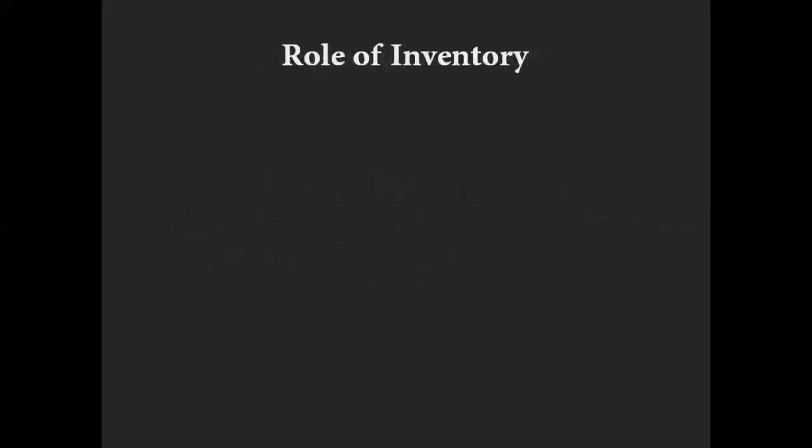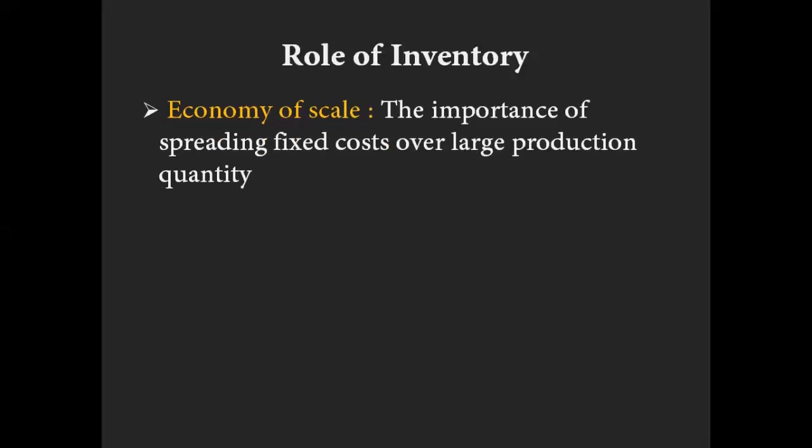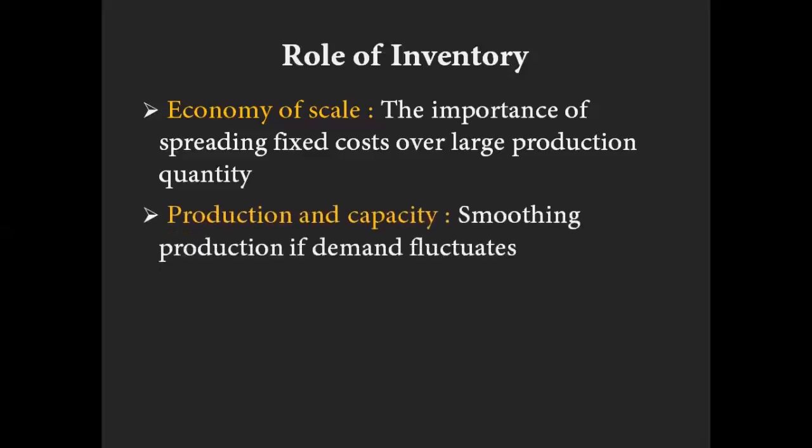Why does managing inventories occupy an important place in supply chain management? There are four major reasons. The first is economy of scale. For example, if we are planning to supply our warehouse with spare parts, no matter how many items we buy there is a fixed cost to ship that quantity and store it. Therefore, if we can spread that fixed cost over that quantity, the individual cost per item goes down — that's what we mean by spreading fixed costs over a large production quantity.